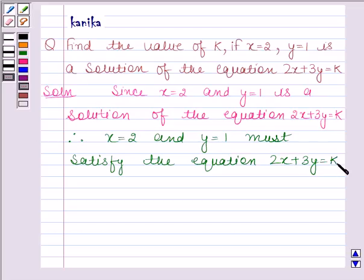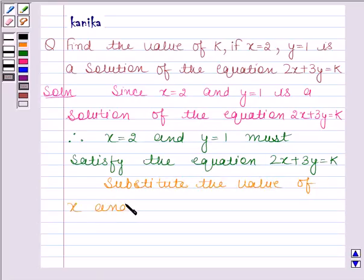That means if I substitute the value of x and y in this equation, then LHS is equal to RHS. So let's now substitute the value of x and y in 2x + 3y = k.